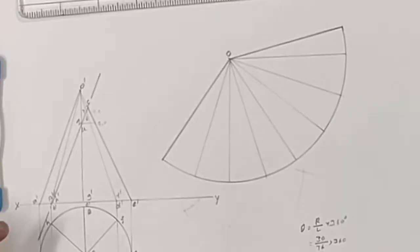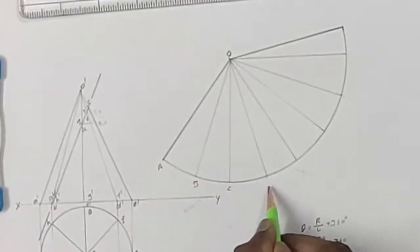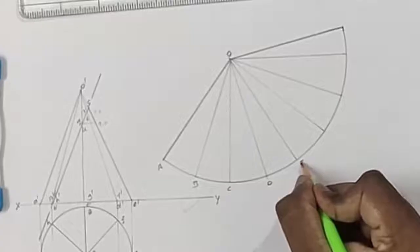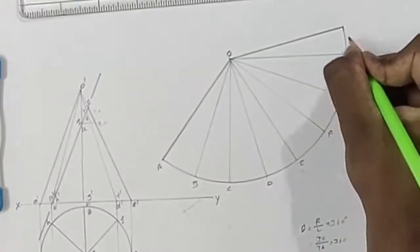Now we have to transfer the points to the development. Let us name the points in the development here. This is A, B, C, D, E, F, G,